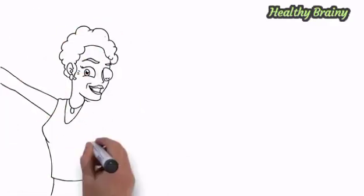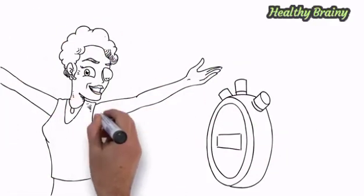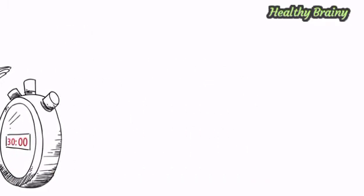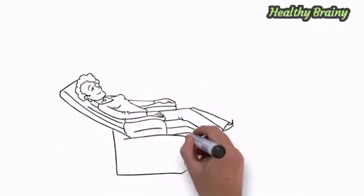The DSAEK cornea transplant is performed as an outpatient procedure. It takes about 30 minutes and then you're on your way. You'll be asked to lie on your back and look up at the ceiling for the first 24 hours so your new cornea can settle in.